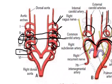The sixth aortic arch gives rise to the right pulmonary artery on the right side and the left pulmonary artery on the left side. From the left pulmonary artery, the ductus arteriosus is developed.